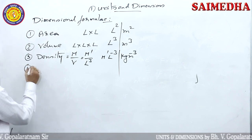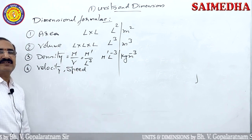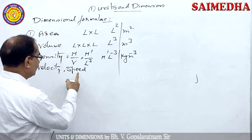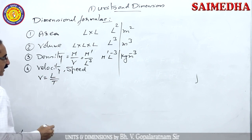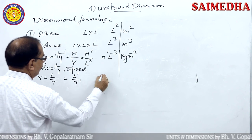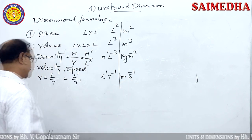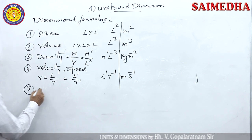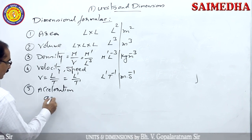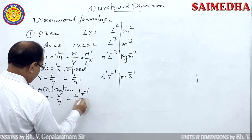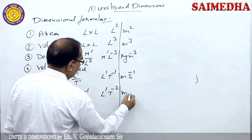Velocity is displacement by time: L¹T⁻¹, units: m/s. Note that velocity is a vector while speed is a scalar, but they share the same dimensional formula. Acceleration is velocity by time: L¹T⁻¹ / T¹ = L¹T⁻², units: m/s².